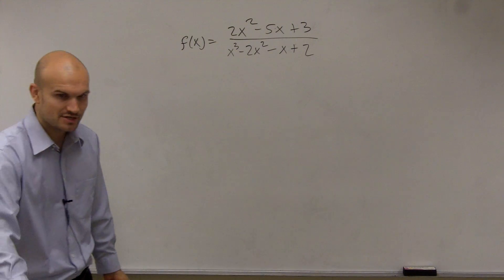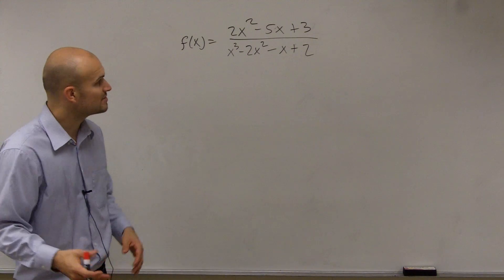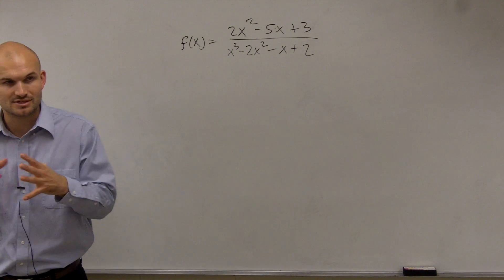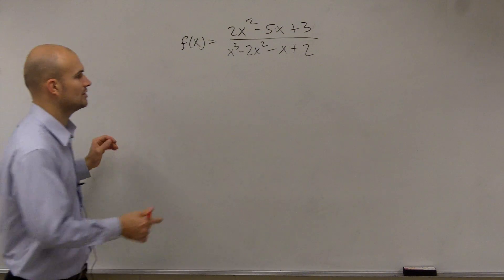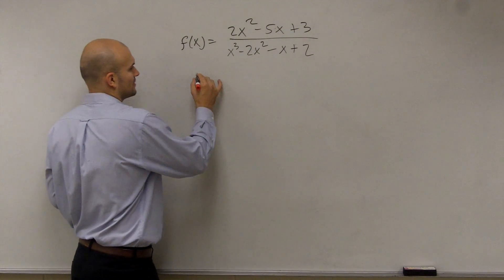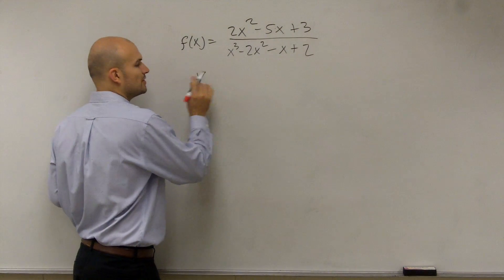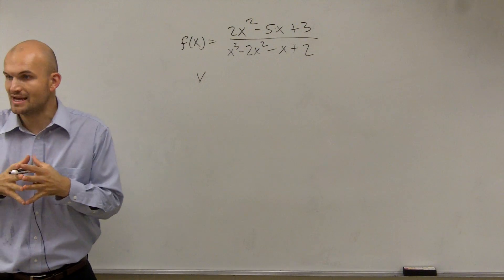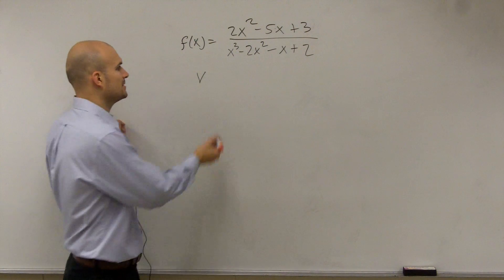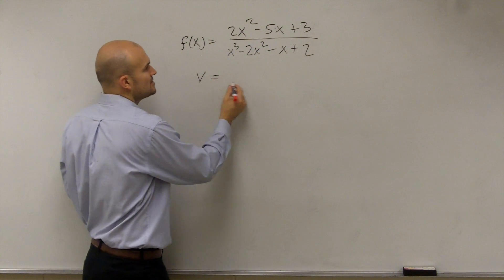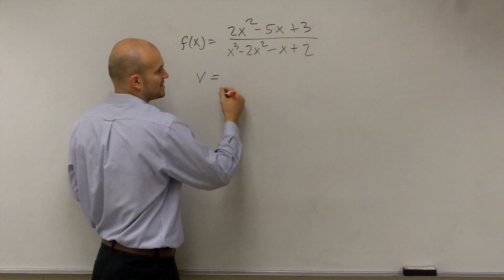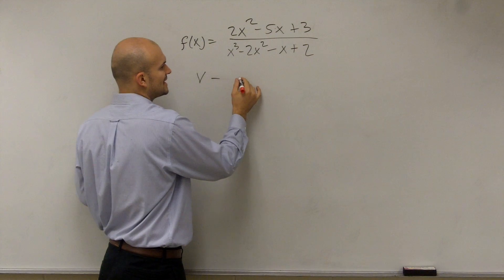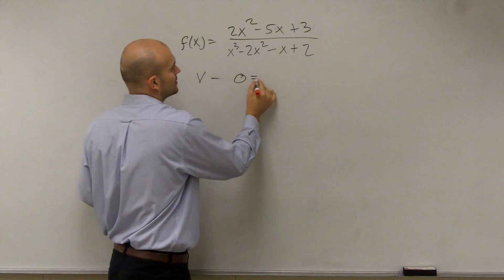The easiest and first thing I want you to do is find the vertical asymptote. Remember, the vertical asymptote is when the values of x that make our denominator equal 0. So all I'm going to do is take my denominator and set it equal to 0.